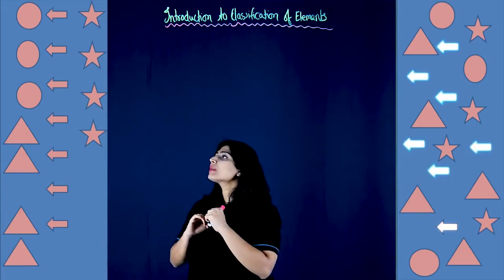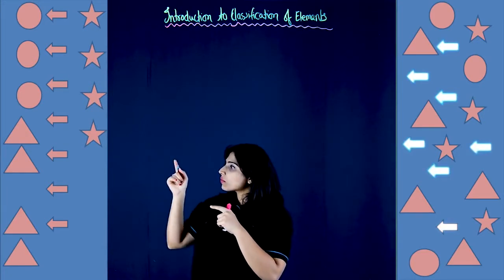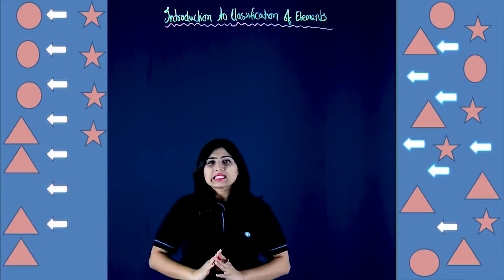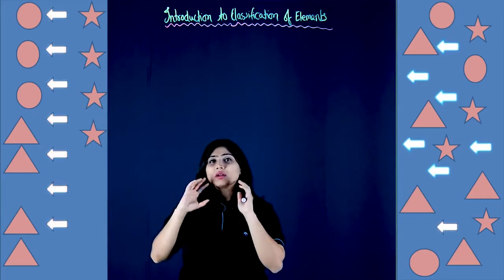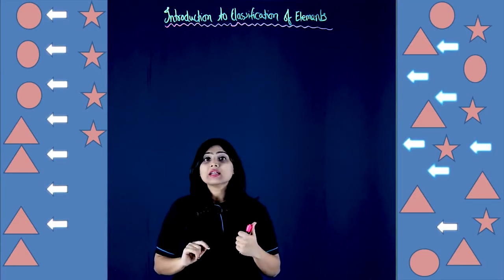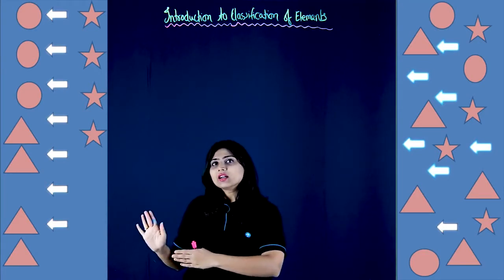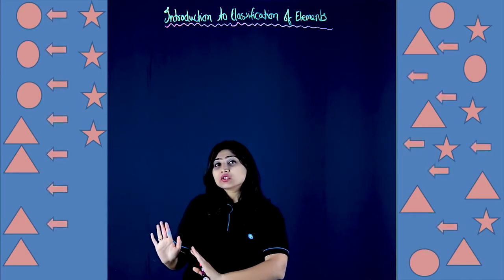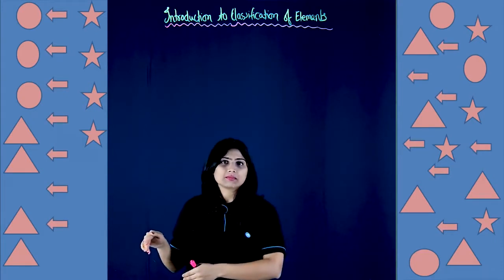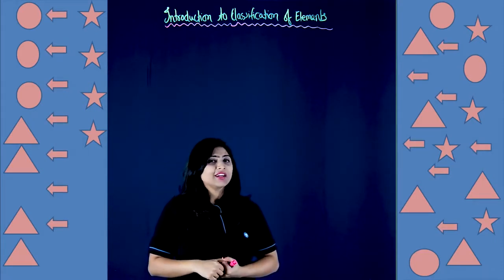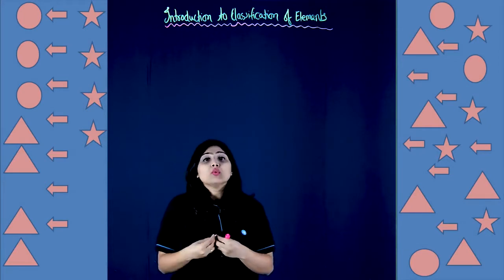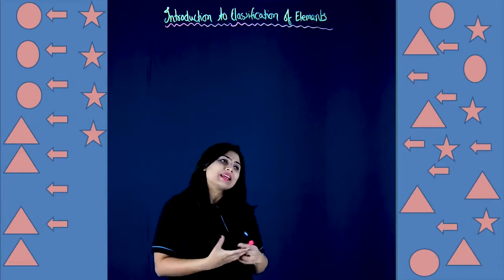Don't you think it was easy counting all the stars and arrows in this picture compared to that one? That is because here all the shapes are arranged — they are classified according to their shapes. But in the chaotic one, if you have to find one thing, you might end up getting another one.